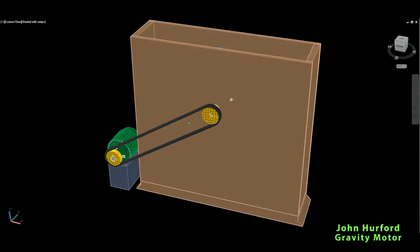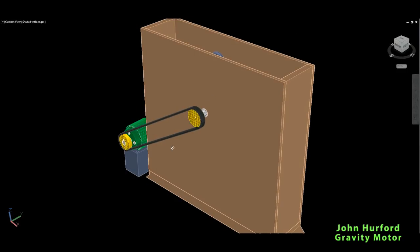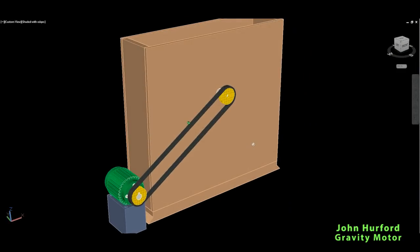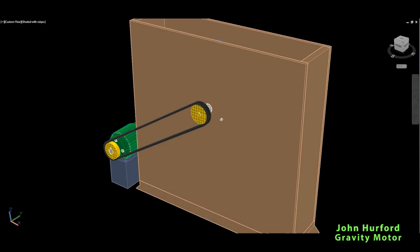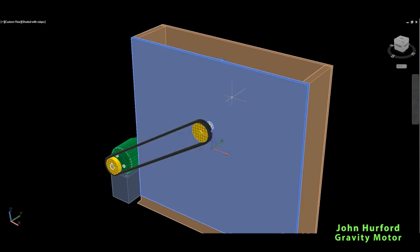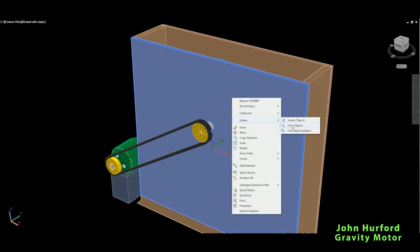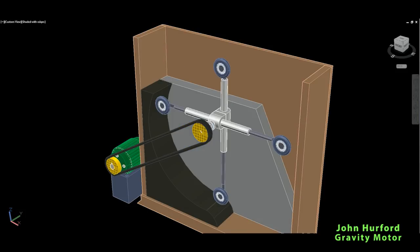You can see the gravity motor will be inside some housing and there's going to be an output shaft connected to the generator or alternator which should give us the free energy. Let me hide the outside housing to see what's inside.